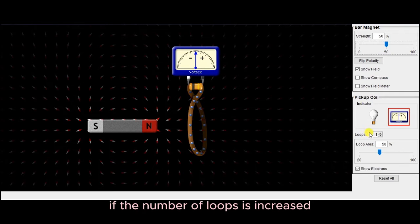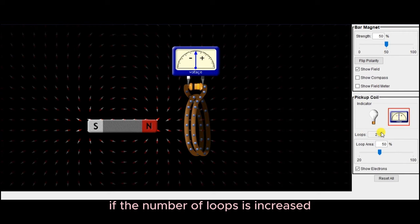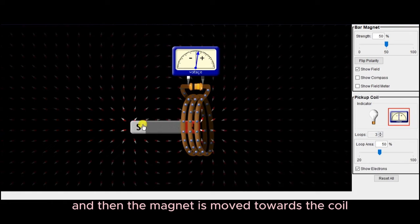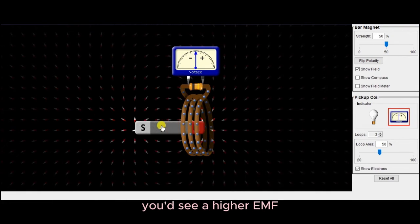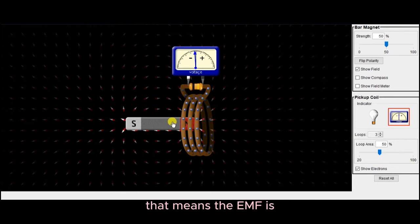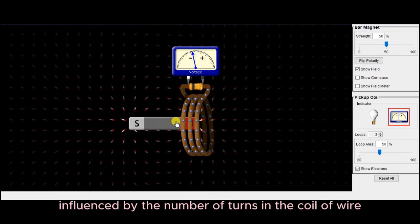Keeping everything constant, if the number of loops is increased, and then the magnet is moved towards the coil and away from it, you'd see a higher EMF. That means the EMF is influenced by the number of turns in the coil of wire.